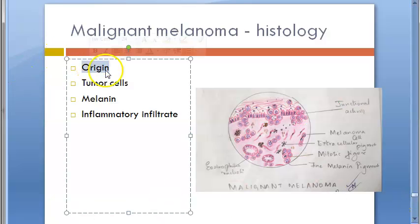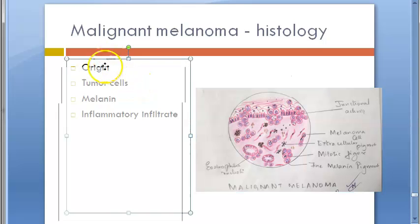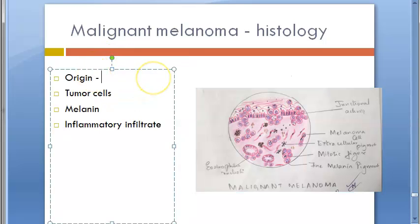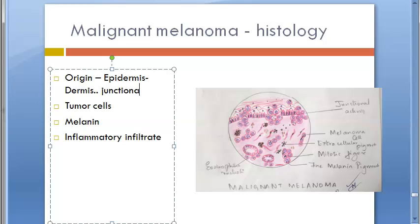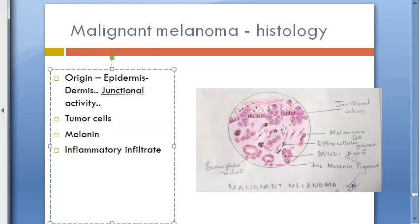When writing the theory, you need four headings along with a diagram. The first heading is Origin. Under origin, state that there is marked junctional activity between the epidermis and the dermis, with growth downwards into the dermis.